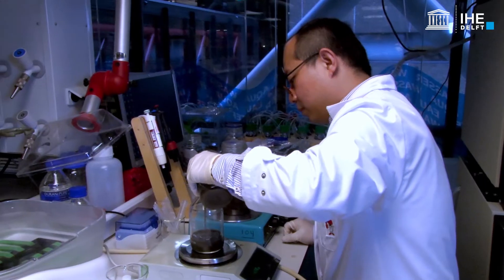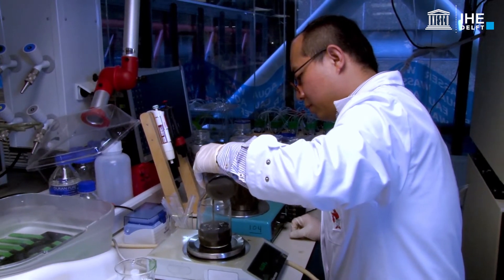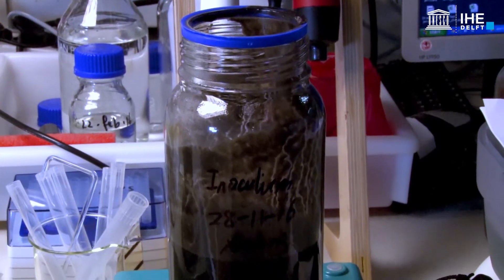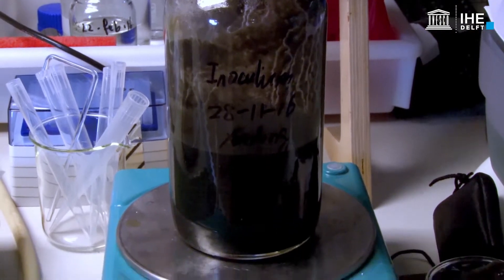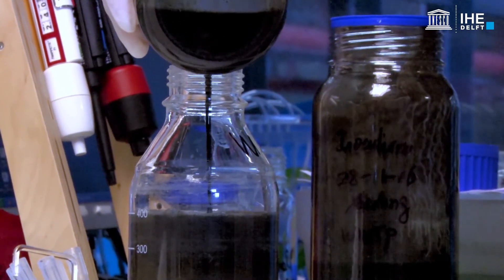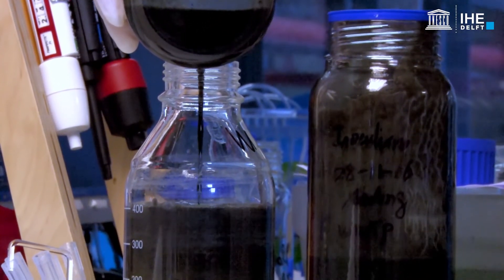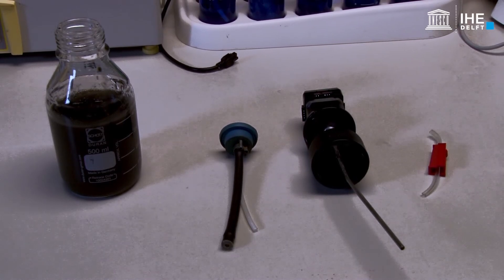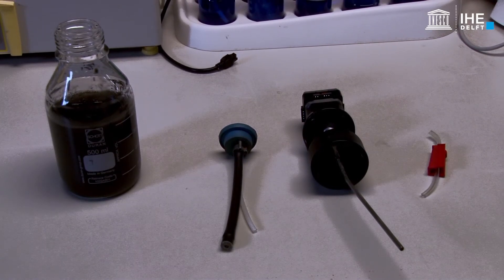As previously indicated, weigh and fill the concentrated activated sludge into the bottle. Add the calculated amount of inoculum into the bottle using a balance. Afterwards, as for the blank group, add the phosphorus buffer, macronutrient and micronutrient solution into the bottle.